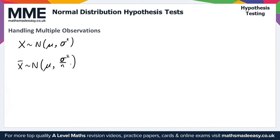This means that if we are given multiple observations, we can do the hypothesis test with the average of the observations rather than a single observation. This is much better than using a single observation because it has a larger critical region. That concludes this Maths Made Easy video on Normal Distribution Hypothesis Tests.